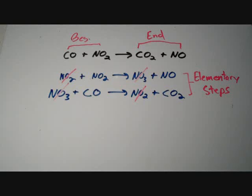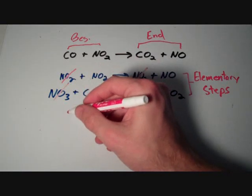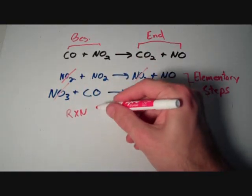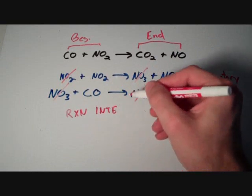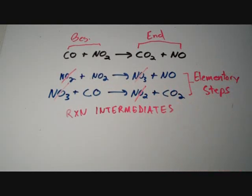These substances — such as one of the NO₂ molecules and NO₃ — that are produced in one step of the reaction and consumed in another are what we call reaction intermediates. Reaction intermediates do not show up in the overall balanced chemical equation, but they play a fairly important role in the overall mechanism of the chemical reaction.